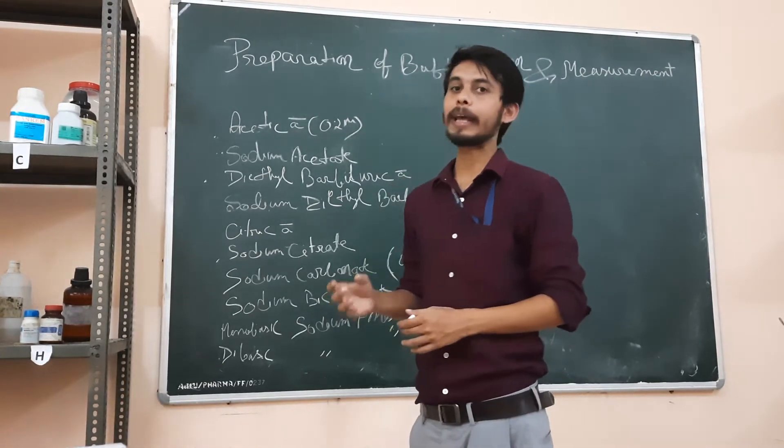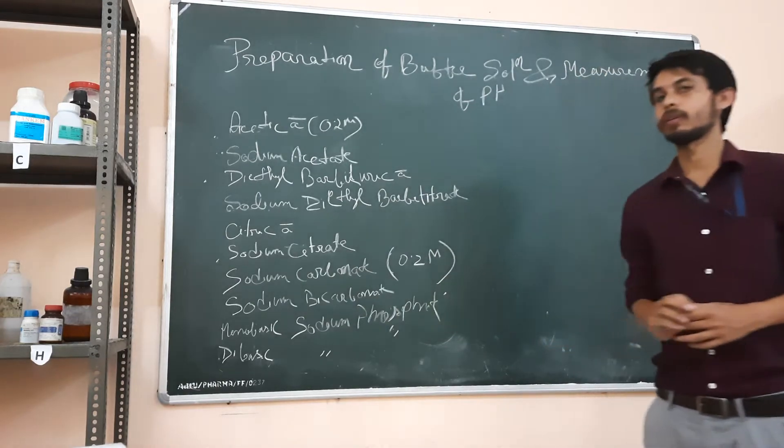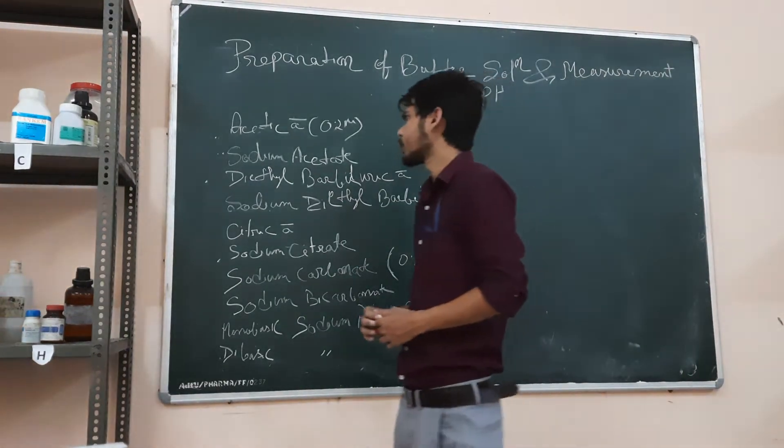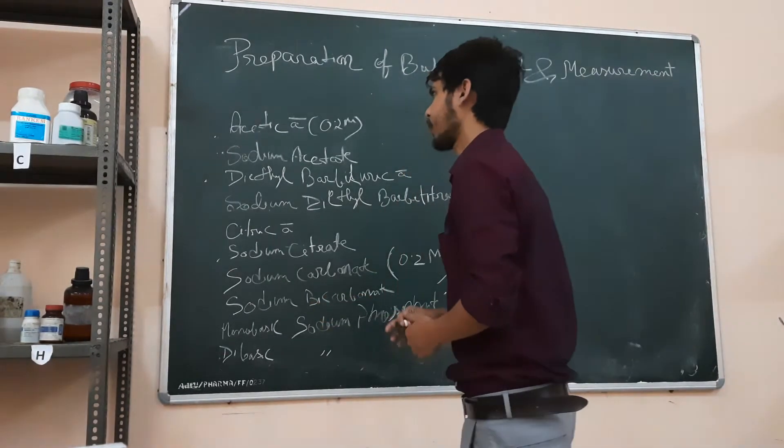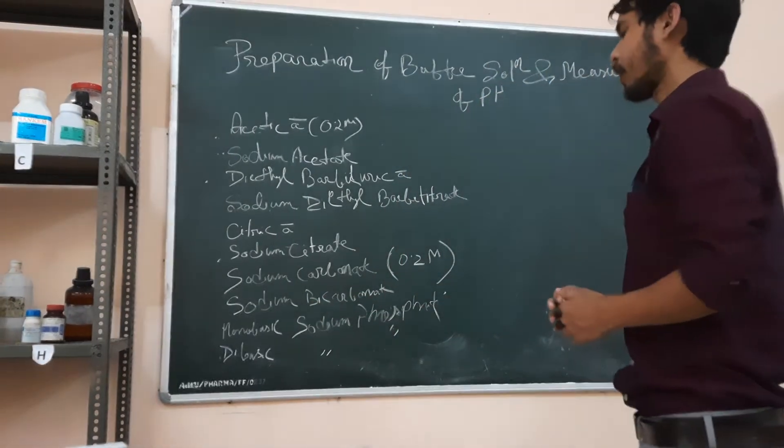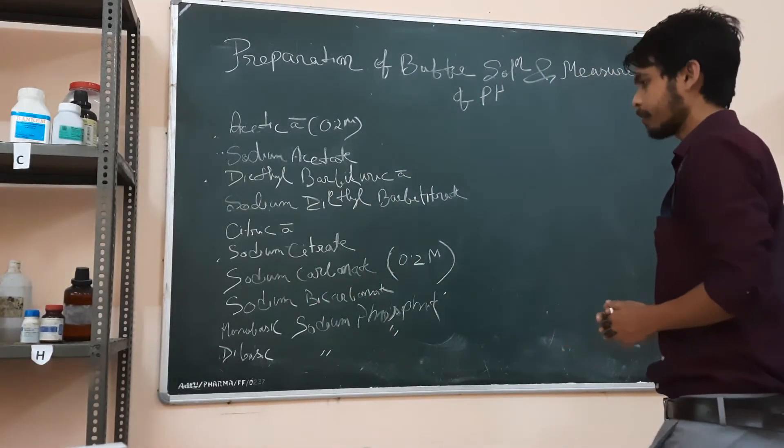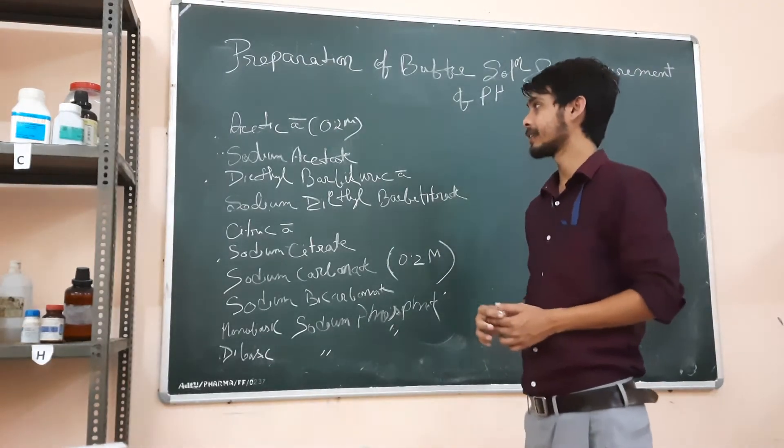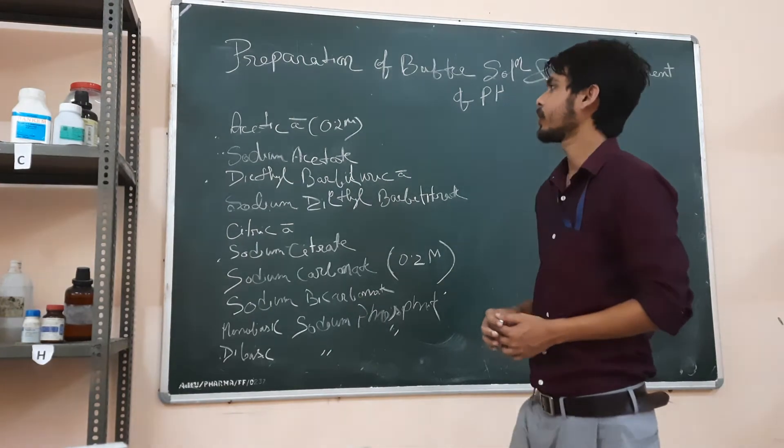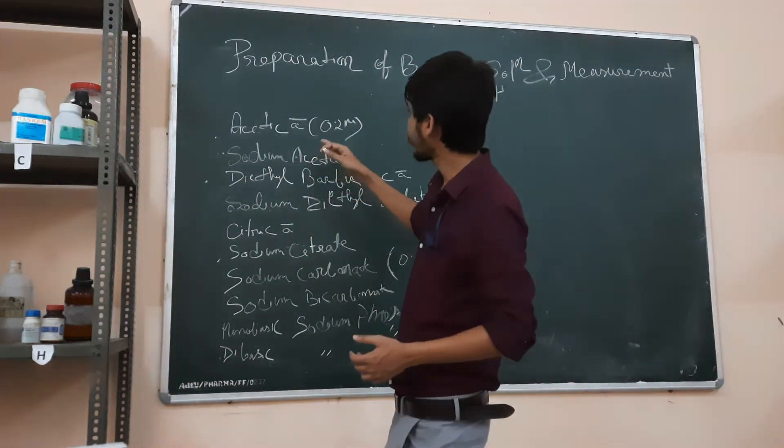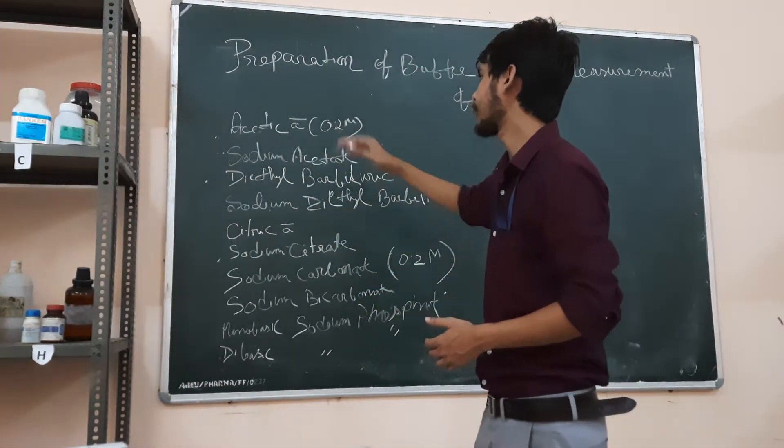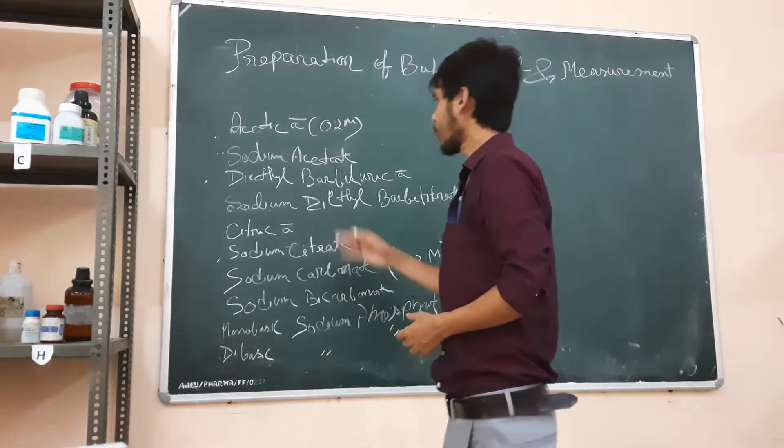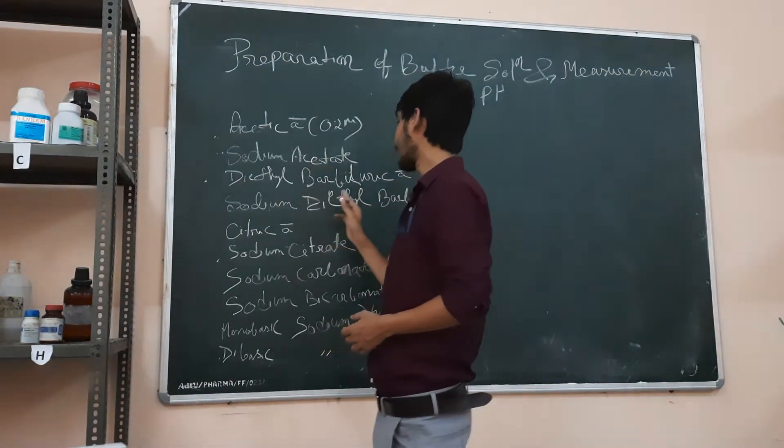To prepare these buffers - acetic acid-acetate buffer, barbiturate buffer, citrate buffer, and phosphate buffer - we need some reagents that I have already written. We need acetic acid 0.2 molar, sodium acetate, diethyl barbituric acid,